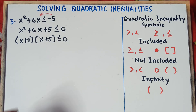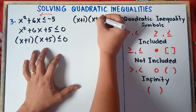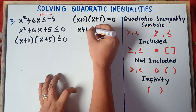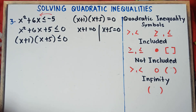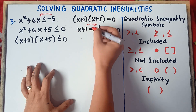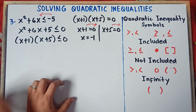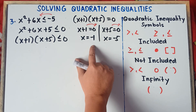The next step is to equate this to zero to locate the critical points, because we will be using the x values on the number line. So x plus 1 equals 0 and x plus 5 equals 0. To get x, transpose 1 from left to right: positive 1 becomes negative 1. For the other, transpose 5: positive 5 becomes negative 5. So our critical points are negative 1 and negative 5.